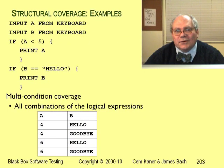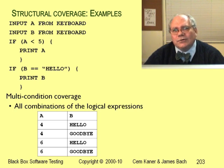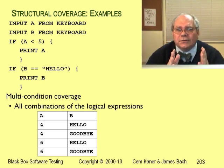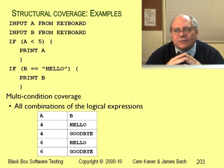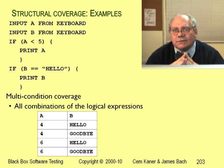Continuing with structural coverage and ignoring interrupts, the next level up is multi-condition coverage. This checks all combinations of the logical expressions — we don't just check the true branch and the false branch for each individual expression, we check them together. With two if statements, we can branch-cover them with two tests, but multi-condition coverage requires four tests: all combinations of trues and falses.